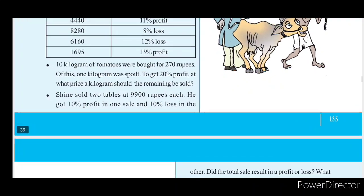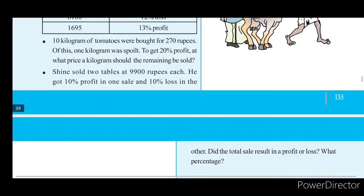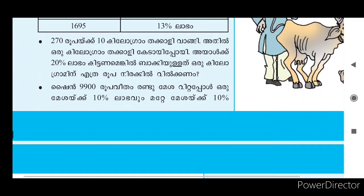10 kg of tomatoes were bought for 270 rupees. Of this, 1 kg was wasted. To get 20% profit, what price per kg should the remaining be sold?